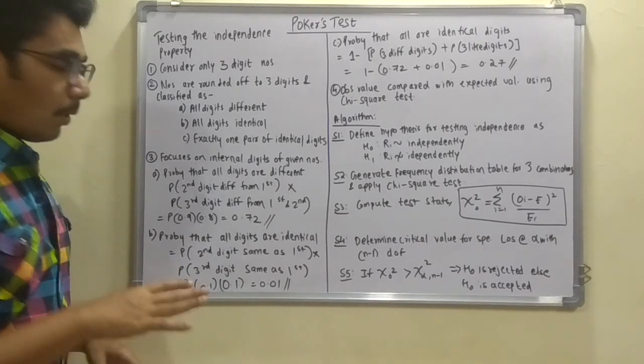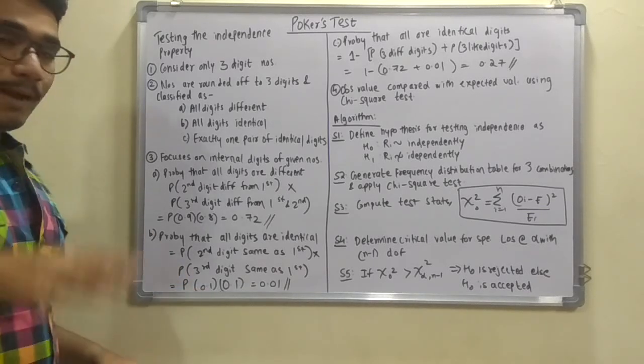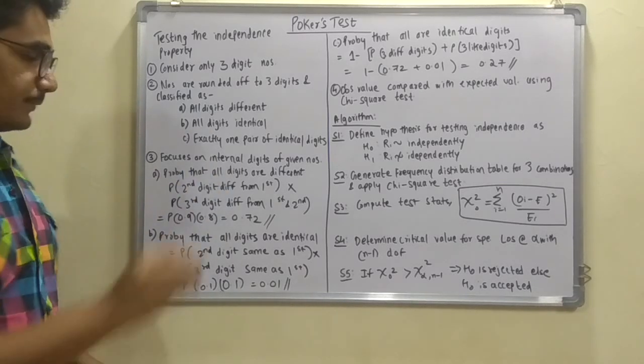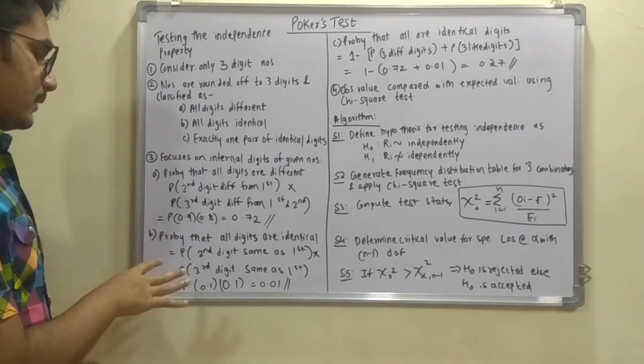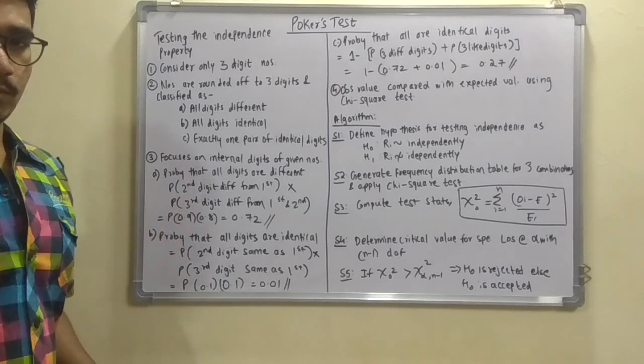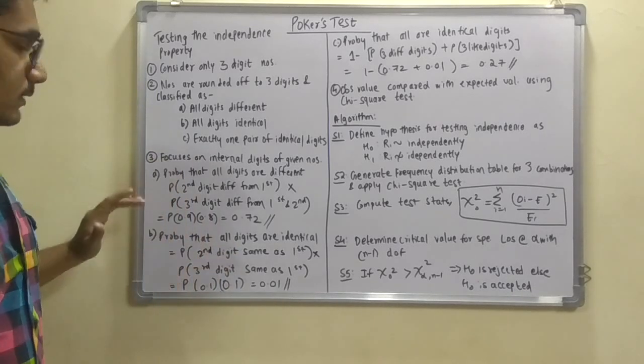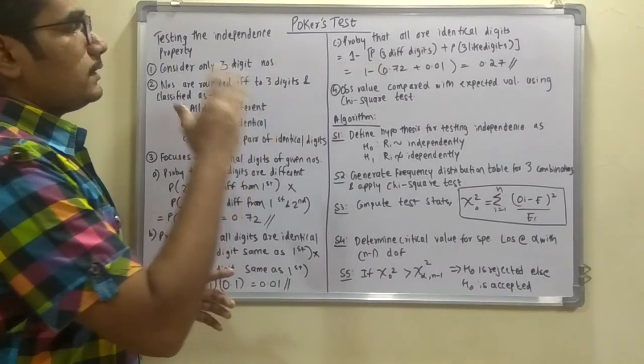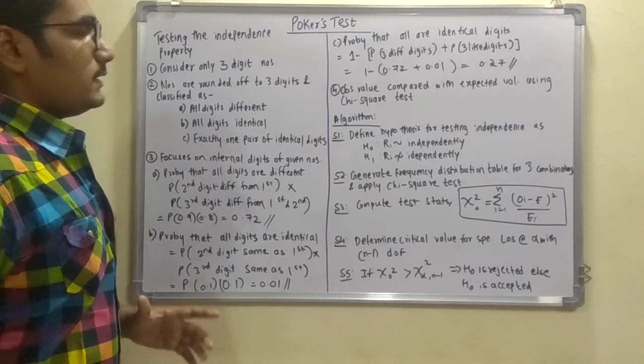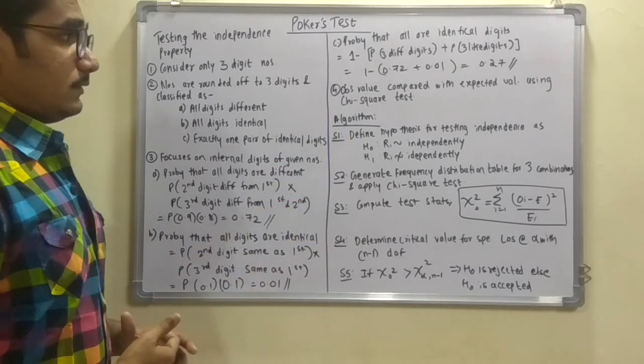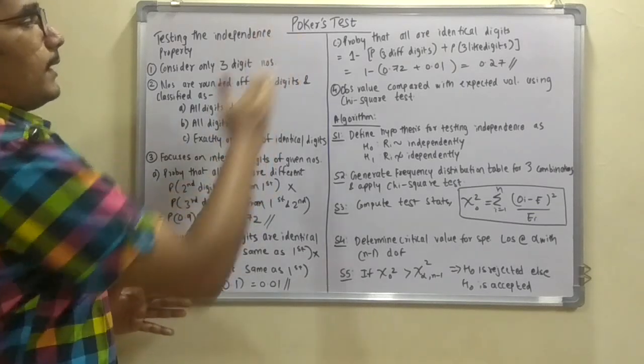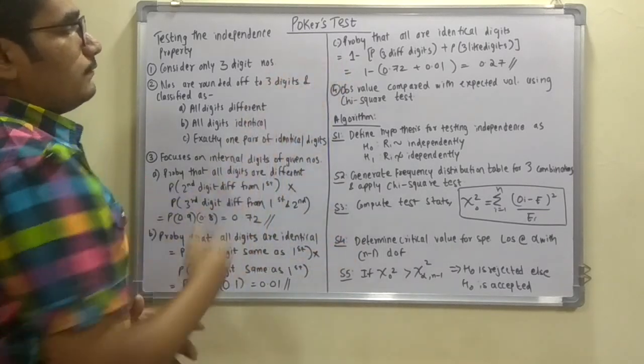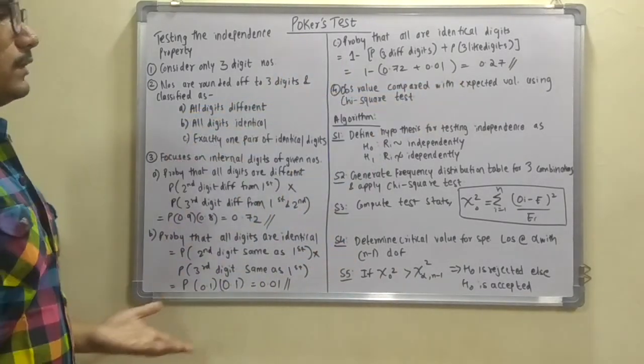Next is the probability that all the digits are identical. For this you will calculate the probability of the second digit same as the first one multiplied by the third digit same as the first one. It is same for both the cases so we will be multiplying probability of 0.1 multiplied by 0.1, that is 0.01. This is the standard for multiplying the table values. Next we move on to the third condition, the probability that exactly one pair of identical digits are there. These are calculated simply by subtracting 0.72 plus 0.01 from 1, you get 0.27.